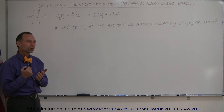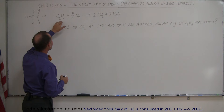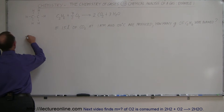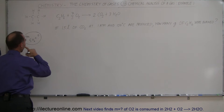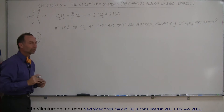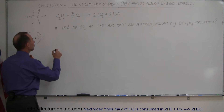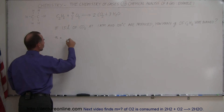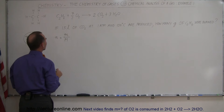So how do we start with that? First of all, we have to understand what they're asking for. They're asking for the mass of ethane — so the question is: mass of C2H6 equals question mark. We want to relate the mass to number of moles. We know that the number of moles of a gas is equal to the mass of the gas divided by the molar mass.